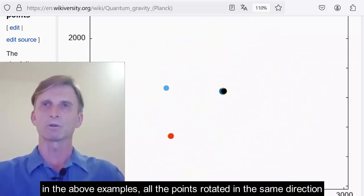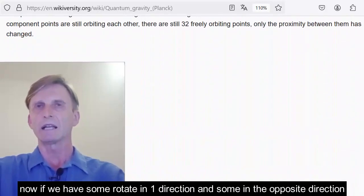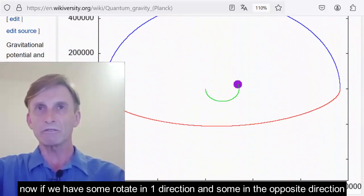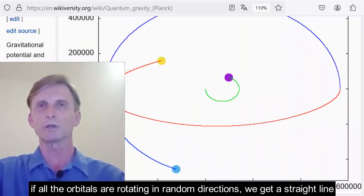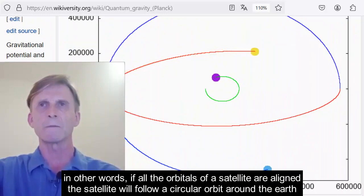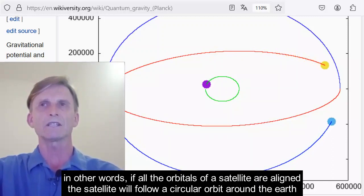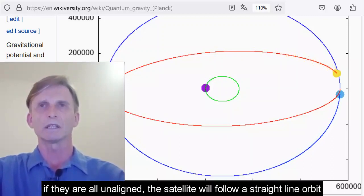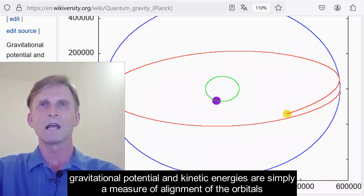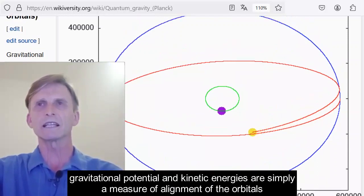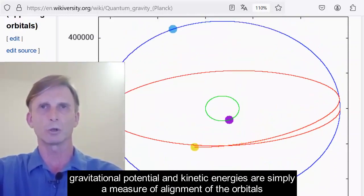In the above examples, all the points rotate in the same direction. Now, if we have some rotate in one direction and some in the opposite direction, then we will get an elliptical orbit. If all the orbitals are rotating in random directions, we will get a straight line. In other words, if all the orbitals of a satellite are aligned, the satellite will follow a circular orbit around the Earth. If they're all unaligned, the satellite will follow a straight line orbit. We call this orbit falling. Gravitational potential and kinetic entities are simply a measure of alignment of the orbitals.